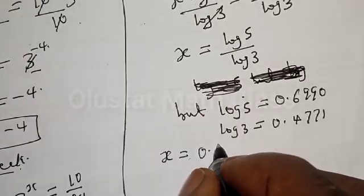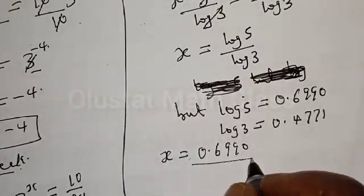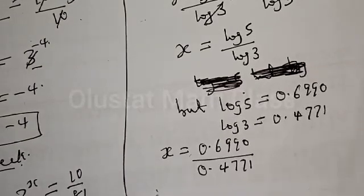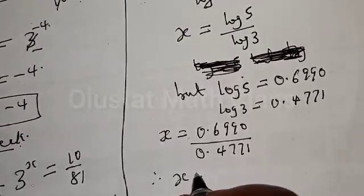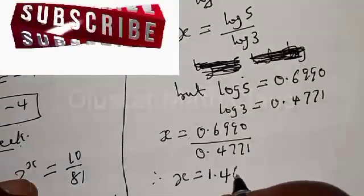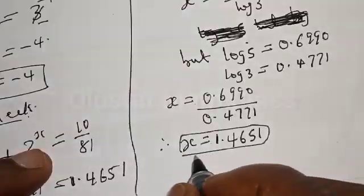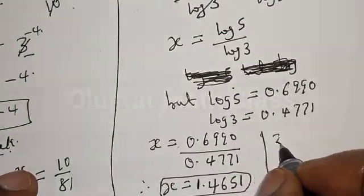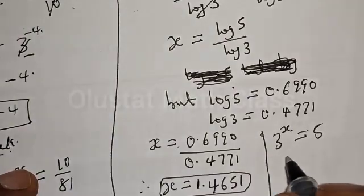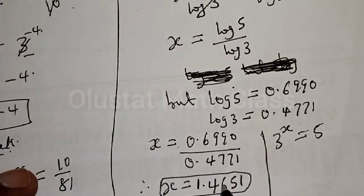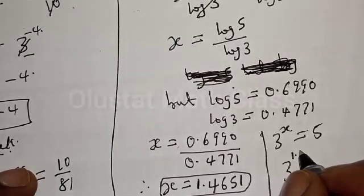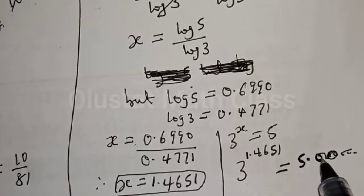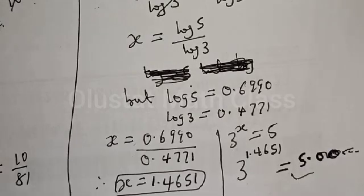That is 0.6990 divided by 0.4771. Therefore our final answer is x is equal to 1.4651. If you want to check: we have 3 raised to the power x equal to 5, and when x equals 1.4651, we have 3 raised to the power 1.4651 equal to 5.00, which satisfies the given equation.